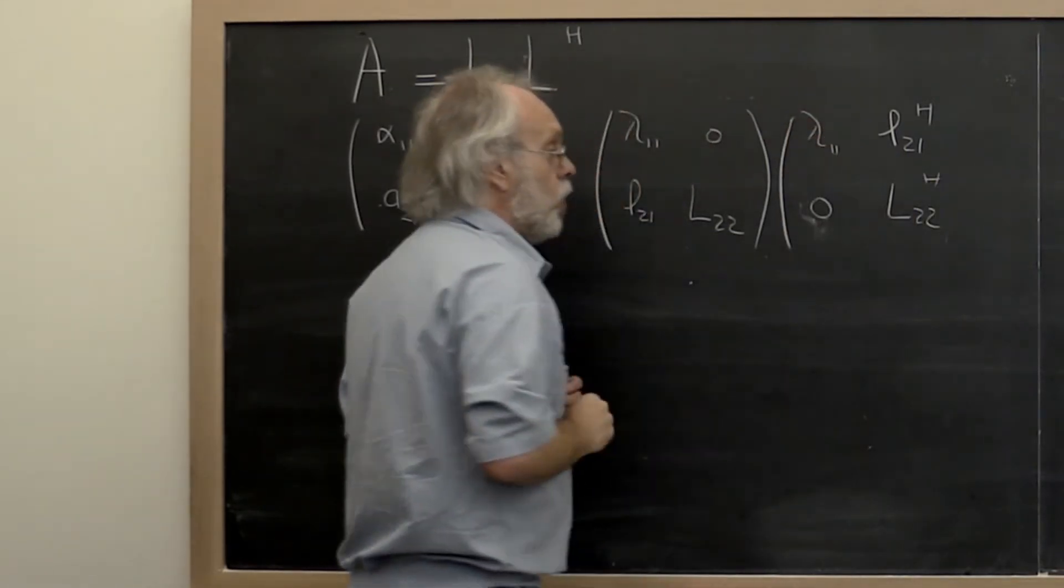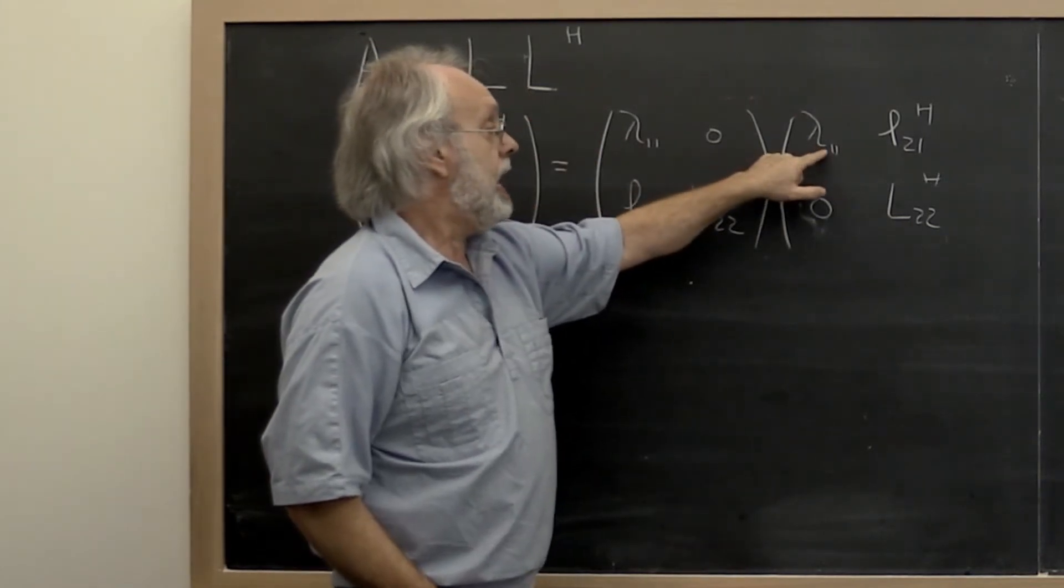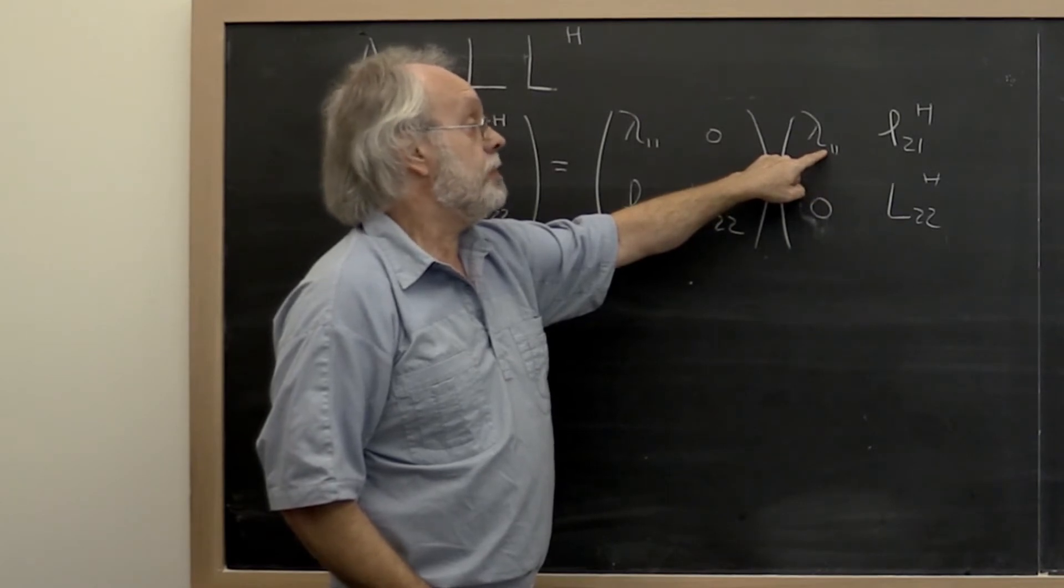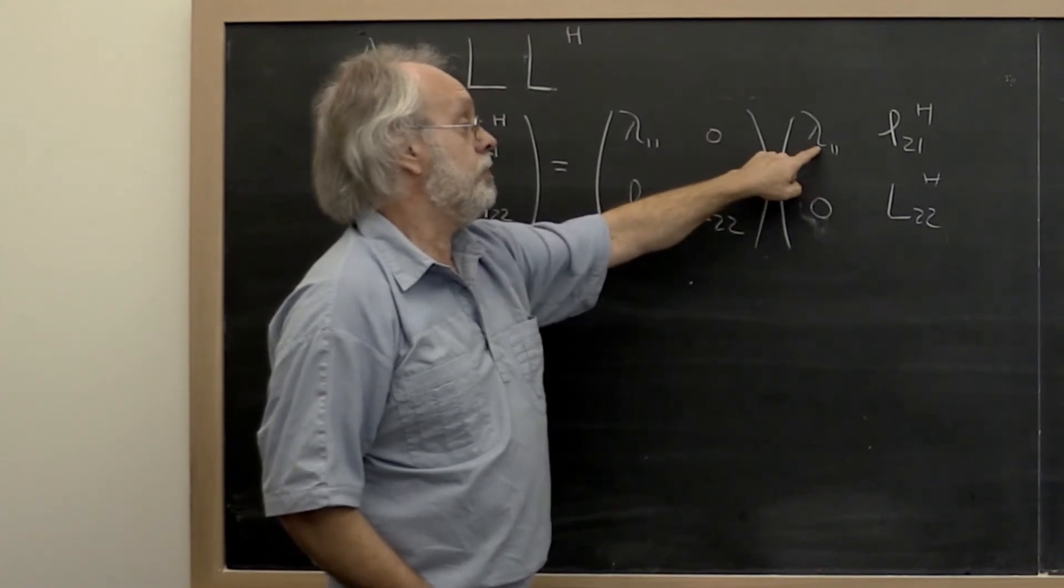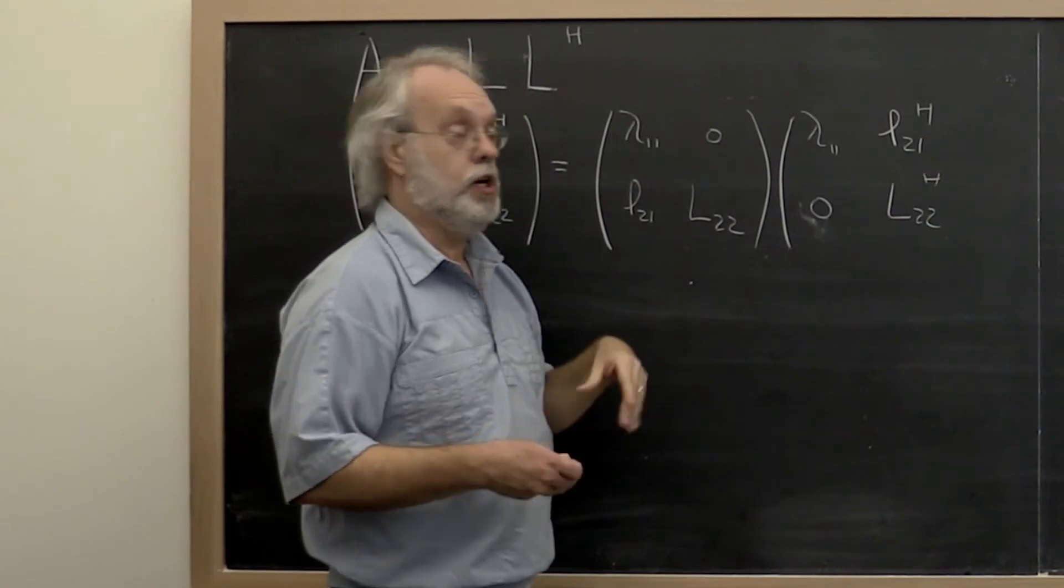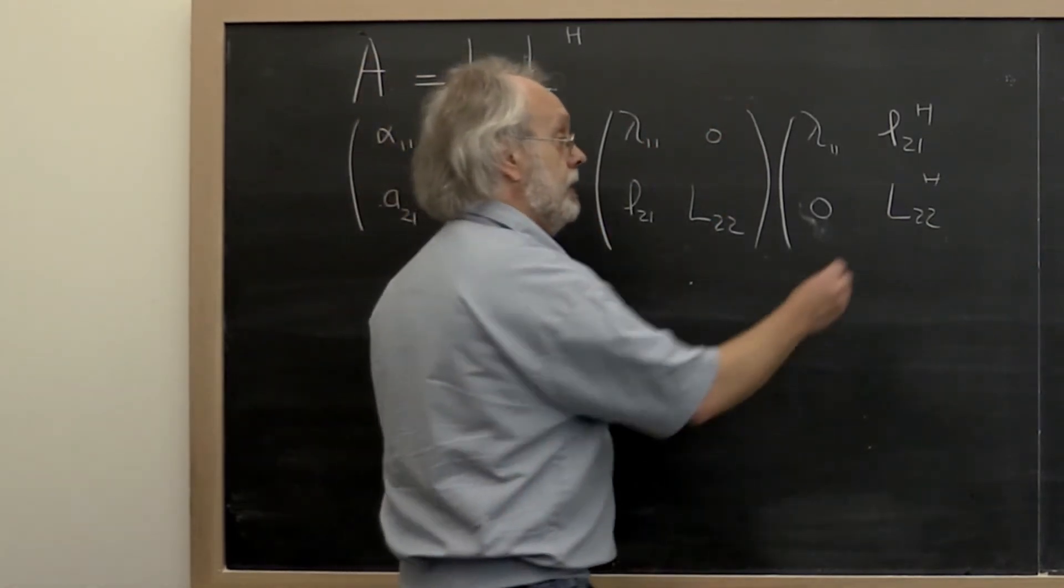And our claim is that we can choose our L in such a way that lambda_1,1 is real valued. As a matter of fact, we're going to choose it to be positive. And if we take the Hermitian transpose of a real value, then we just get that value right back. So we don't have to put a conjugate or Hermitian transpose on that.